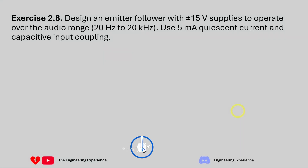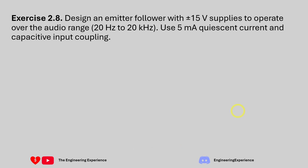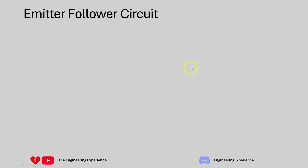For exercise 2.8 we need to design an emitter follower with a plus or minus 15 volt power supply. The emitter follower needs to operate from 20 Hz to 20 kHz, we need to set a 5 milliamp quiescent current, and the input needs to be capacitively coupled. The question doesn't mention anything about the output, but we can capacitively couple that as well. So that's the question — let's go into the solution now.